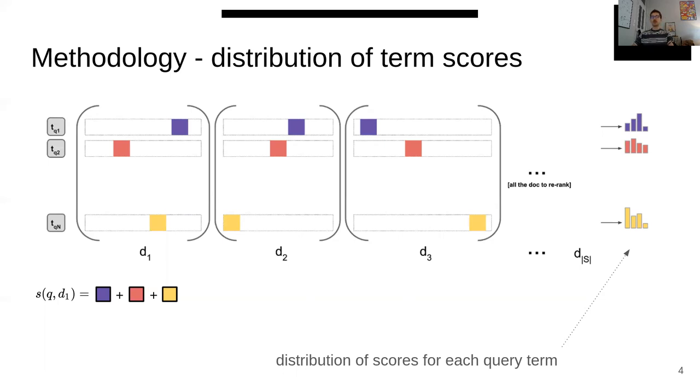For each query, we have a set of approximately 1,000 documents retrieved by a first ranker. For these documents, we analyze how the model attributes scores for each token. Remember, the model assigns one score per document for each query token, so for instance, the purple squares on the first row in the figure. We collect the scores given by the model on our set of documents. After that, we have a distribution of scores for each query token. Our goal is to check if these distributions have different behavior depending on the term characteristics.